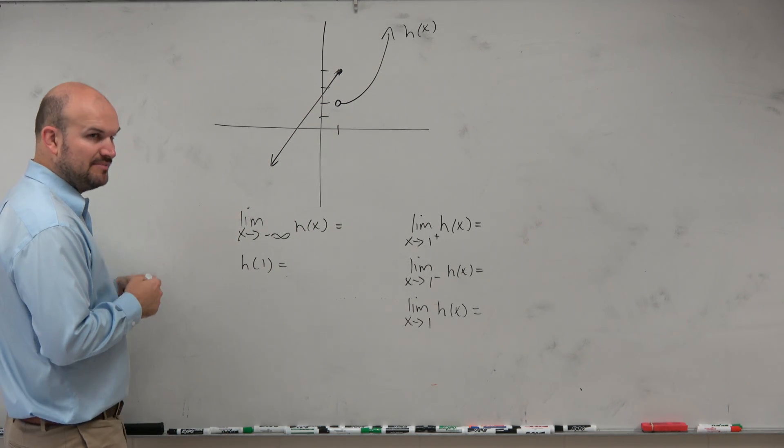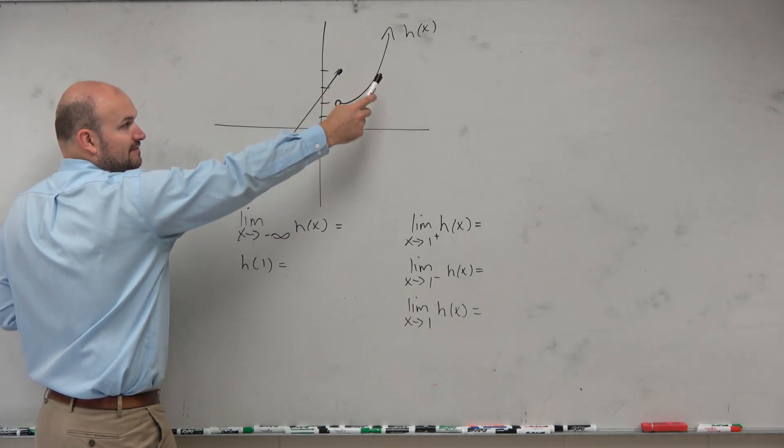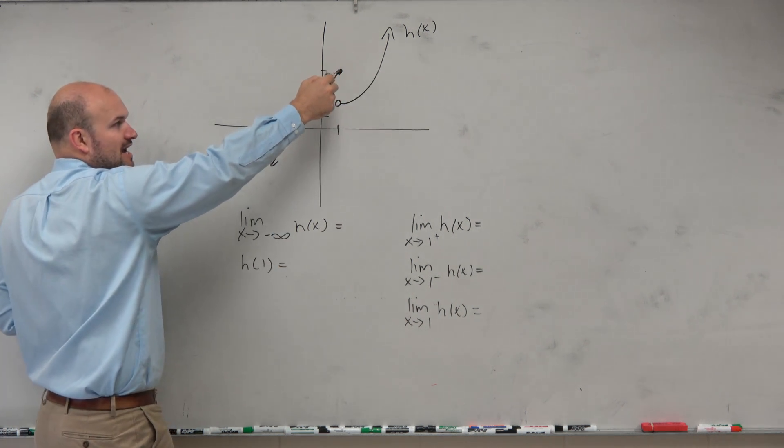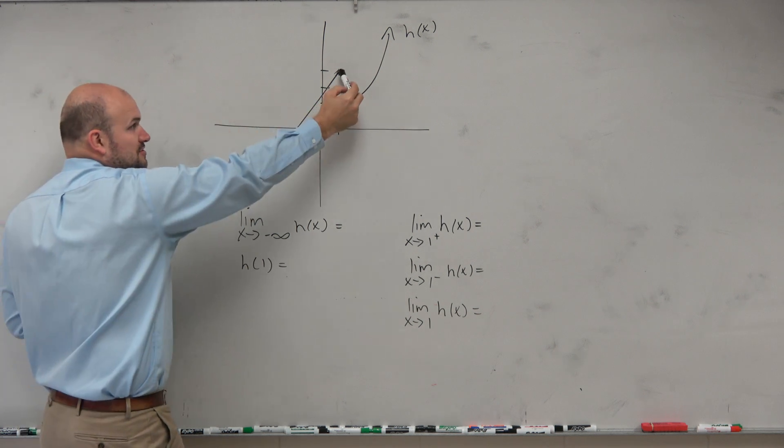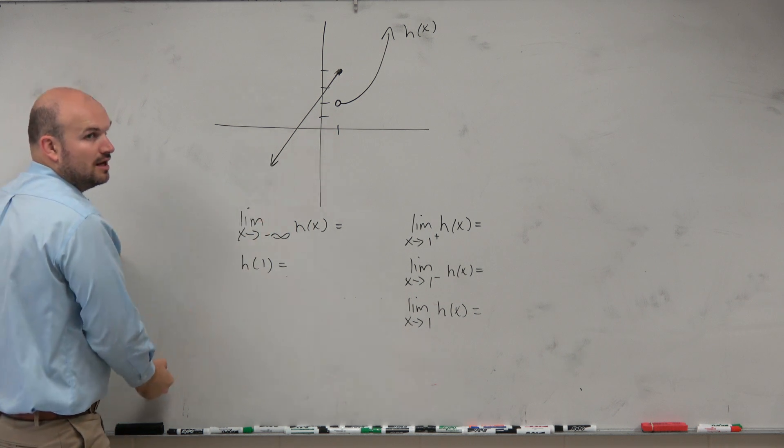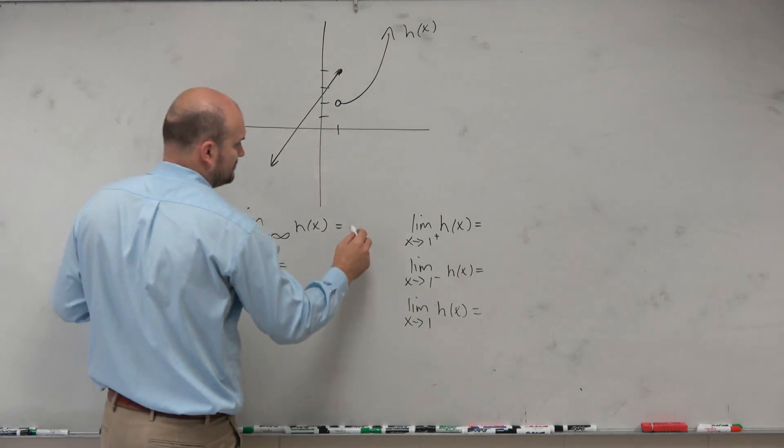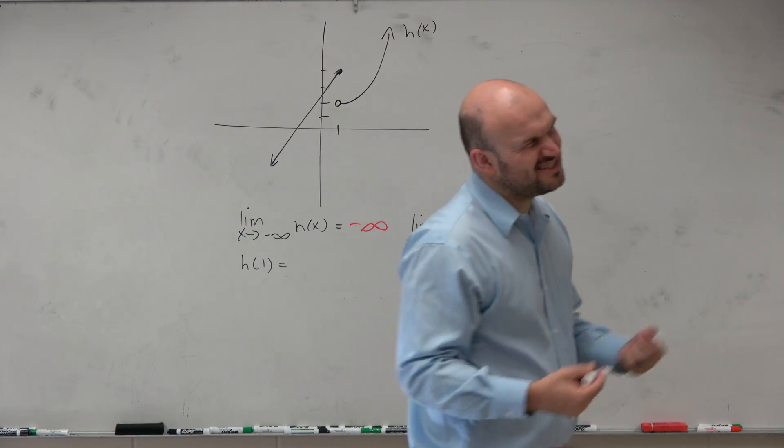So let's kind of knock out one of the end behavior once again. The limit as x approaches negative infinity. So just look at the graph, kind of pick a point. As our x values are going towards negative infinity, as we're going towards the left, our h of x value is going towards negative infinity. Right? That's the behavior with limits. It's just that notation there.